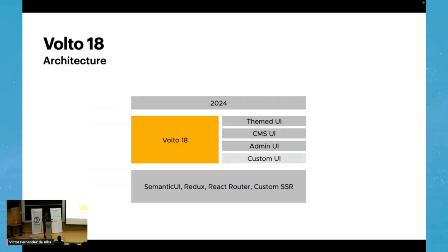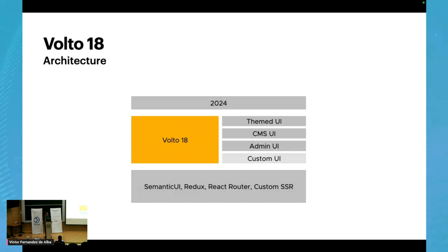In particular, Volto 18 also shared this architecture. At its bottom, Volto is also made as a monolith using Semantic UI, Redux, React Router, and custom server-side rendering. And these four main layers — the theme UI, the CMS UI, the admin UI, and the customizations for every single project — sit on top of that.